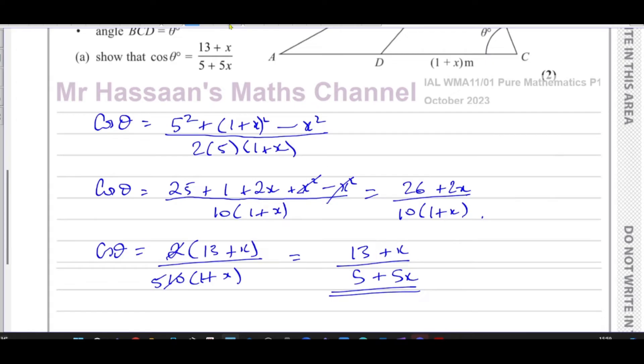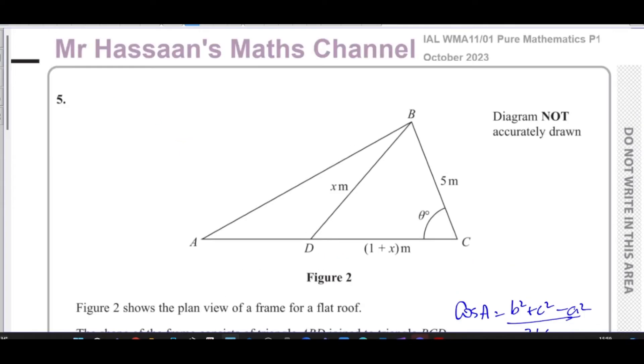And that's exactly what we had to show: 13 plus x over 5 plus 5x. So we've shown that using the cosine rule. Pretty simple. Now we're going to go on to part B.